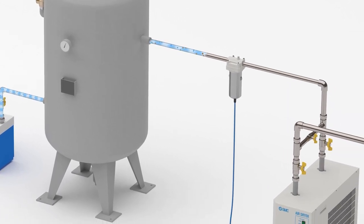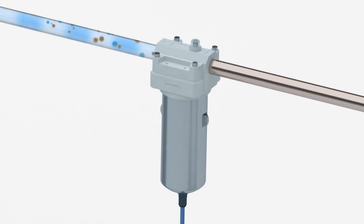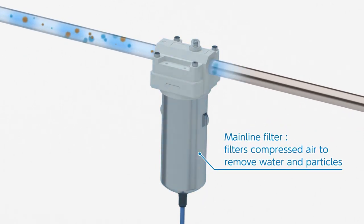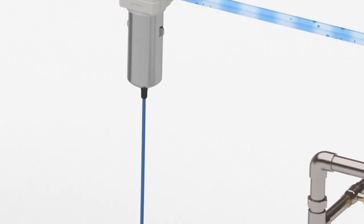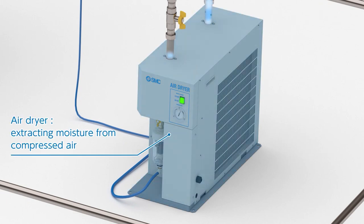Compressed air in this tank contains impurities like solid particles and water droplets. To remove coarse impurities, in the first filtering stage, the air is passed through a mainline filter. The remaining moisture in the air is extracted by passing it through an air dryer.